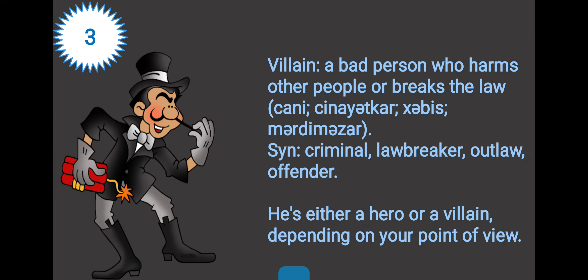For example: his purpose is to eliminate COVID-19. Word three: villain. Villain is a bad person who harms other people or breaks the law. It's translated into Azerbaijani as 'cani', 'cinayətkar', 'xabis', 'mərd', 'mazar'. The synonyms are criminal, lawbreaker, outlaw, offender.